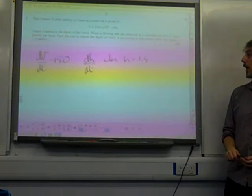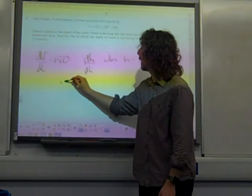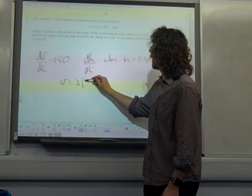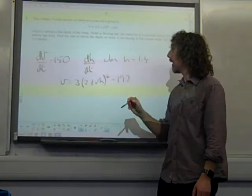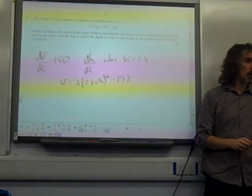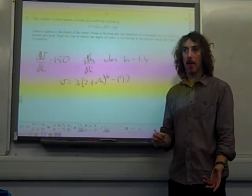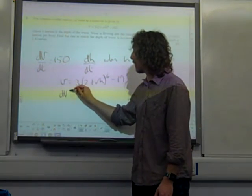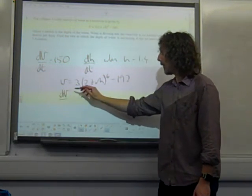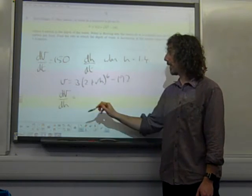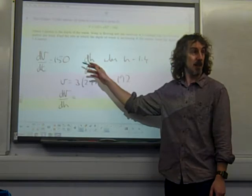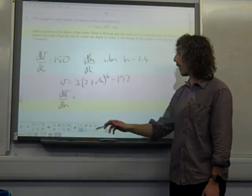Okay, and we're given this formula. We're given that V is 3 times (2 plus root H) to the 6 minus 192. So it's pretty obvious that it's a differentiation question now. We expect, before we do anything else, we're going to need to differentiate that. Now V is written in terms of H. So we're finding dV by dH, even though it's dH by dt that we eventually want. This is what we're going to work at here.